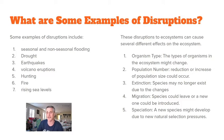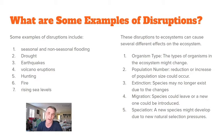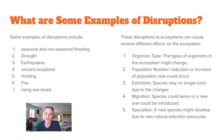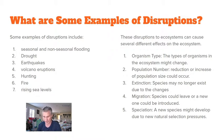Third, extinction — species could no longer exist. For example, there's a species of fish in the water areas of Ash Meadows near Pahrump, and a similar situation in Death Valley, where organisms are only found in one small area. If something were to happen to that area, it could cause that species to go extinct. Fourth, migration — species could leave and new ones be introduced. Fifth, speciation — species might develop into a new species through the process of natural selection.